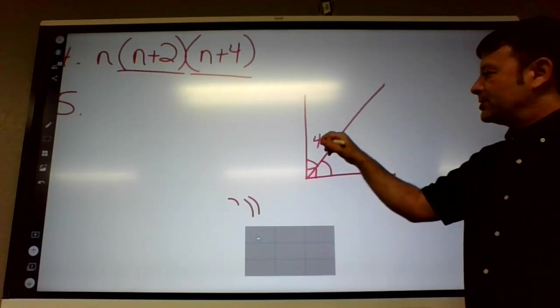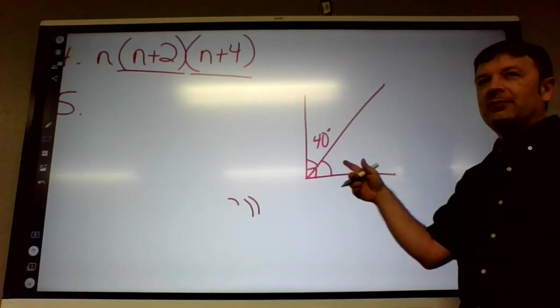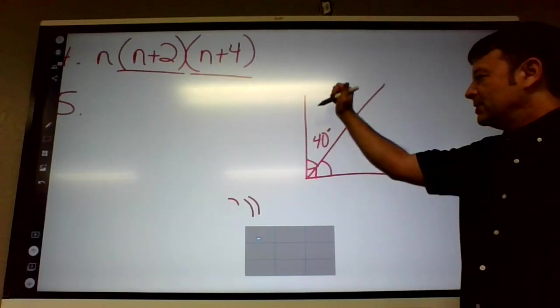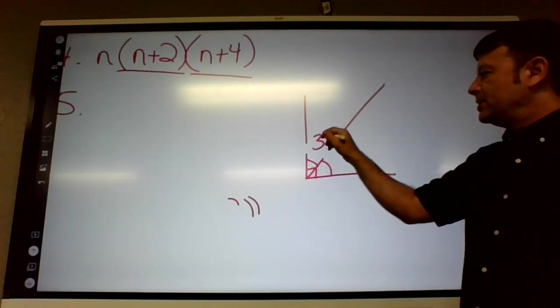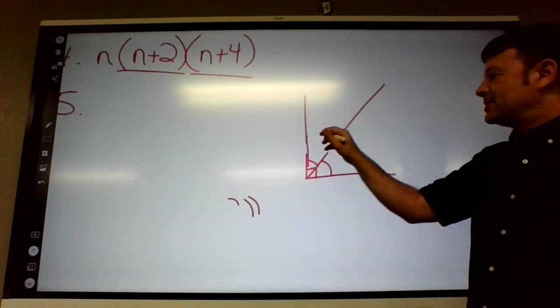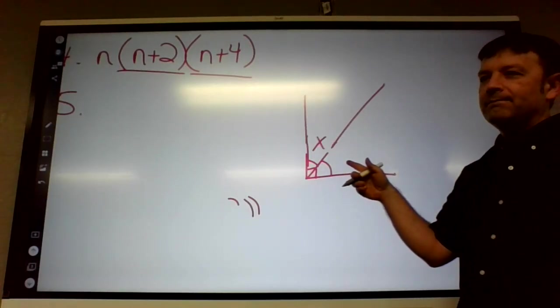So if this angle was 40 degrees, what would this angle have to be? 50. Because 90 minus 40 is 50. And if this angle were 30 degrees, what would the other angle be? 60. What if this is X degrees, what is this angle?